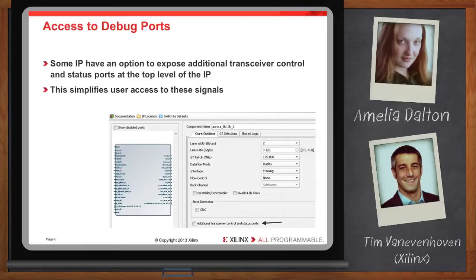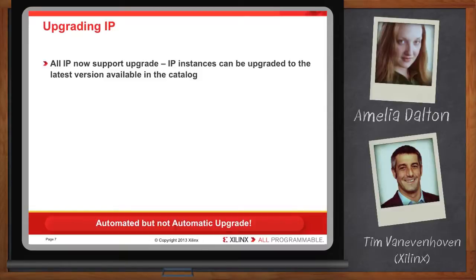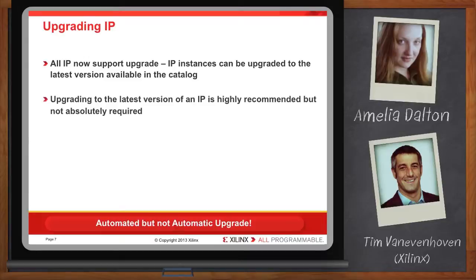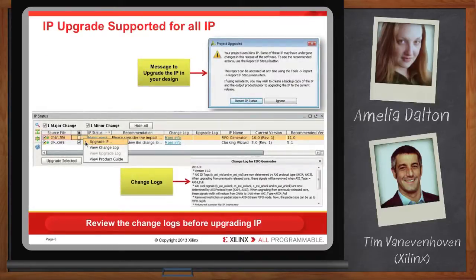I'm assuming you're continually enhancing the IP in Vivado — how do I take advantage of the latest version of IP available? We do often enhance IP with new releases of Vivado, and all of the IP in our IP catalog now supports automated upgrade in Vivado. Upgrading to the latest version of an IP is highly recommended but is not absolutely required, and that's important. Although we focus our testing on the current and previous versions of the IP, you can use existing generated output products without upgrading if you're not ready. When Vivado detects that some IP is out of date, you're prompted to generate an IP status report, which gives the current and recommended versions for each IP in your project, and provides hyperlinks so you can view the change logs and upgrade logs for each IP to decide if upgrading is right for you given where you are in your design cycle.